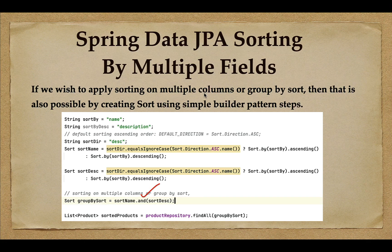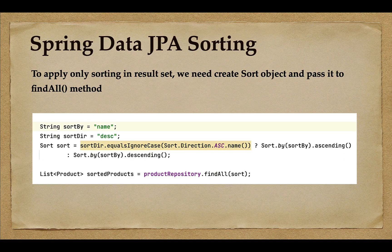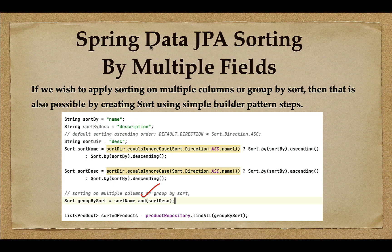Hi, welcome back. In the previous lecture we saw how to implement sorting using Spring Data JPA — specifically how to sort by a single field. In this lecture we'll see how to implement sorting by multiple fields using Spring Data JPA. If you wish to apply sorting on multiple columns or group-by sort, that is also possible by creating a Sort using a simple builder pattern.